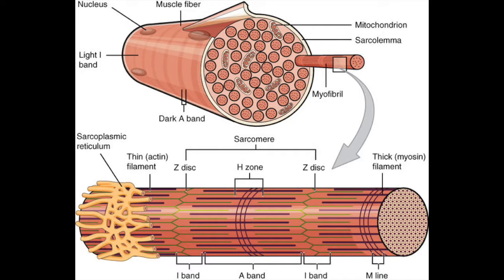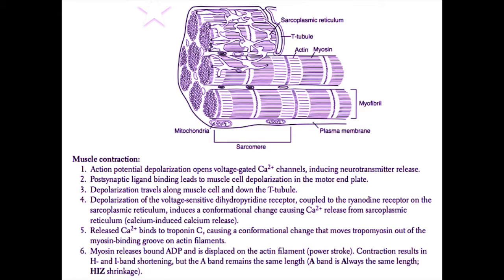Now let's talk about how an impulse from a nerve can actually result in muscle cell contraction. We begin with an action potential that starts in a nerve — for example, when you decide to move your arm, the nerve going to that muscle carries an action potential down its length. When that action potential reaches the end of the nerve, it opens voltage-gated calcium channels that induce the release of neurotransmitters.